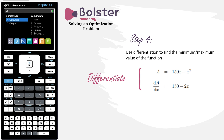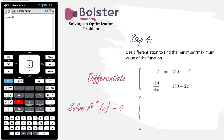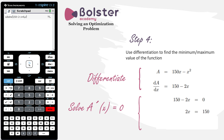Now that we have the derivative expression, we solve it equal to zero to find where the maximum or minimum occurs. Going into the scratch pad — menu, algebra, nSolve — we solve 150 - 2x = 0 for x, and we get x = 75.